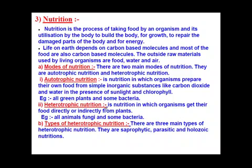The next type is heterotrophic nutrition, where the organism depends upon plants either directly or indirectly. Organisms in this category include all animals, fungi, and some bacteria. Heterotrophic nutrition is further divided into three main types: saprophytic, parasitic, and holozoic nutrition.